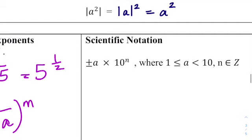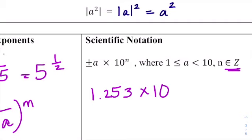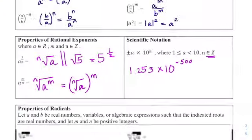Quick review for scientific notation: your first number has to be between 1 and 10, not including 10. The powers of 10 are going to be integers — they could be negative numbers or any integer for that power.